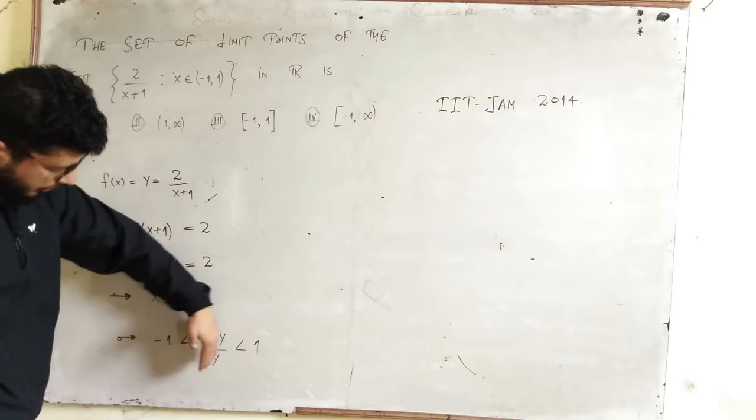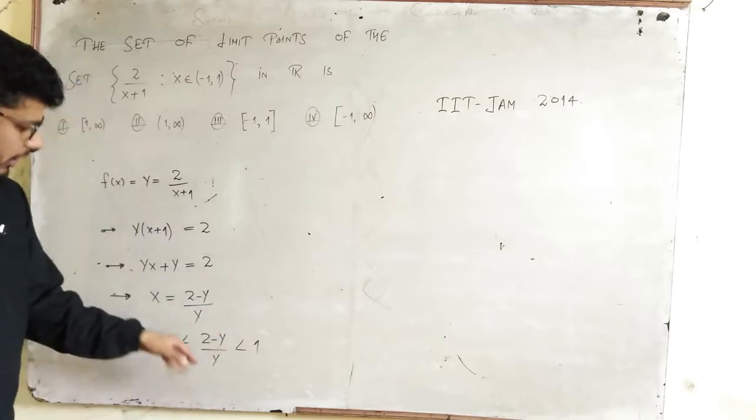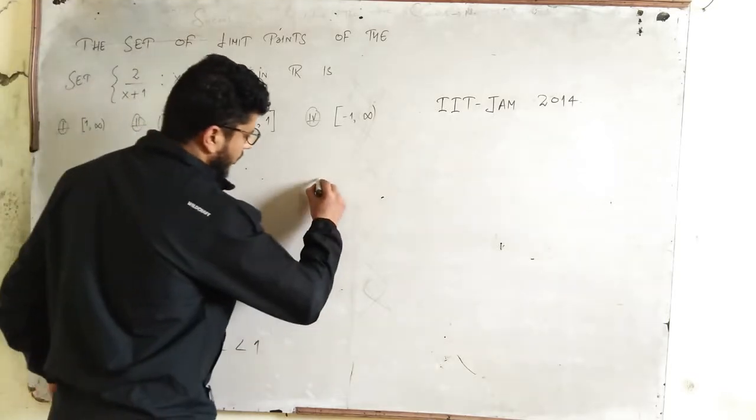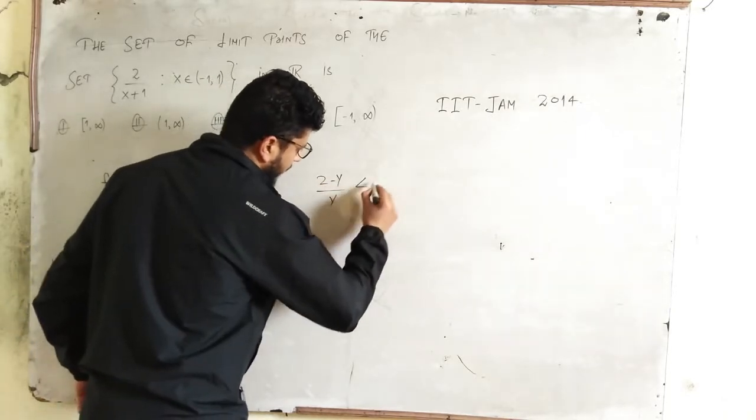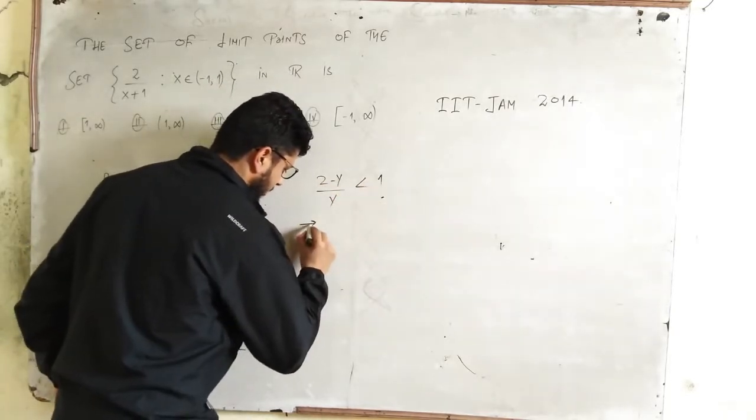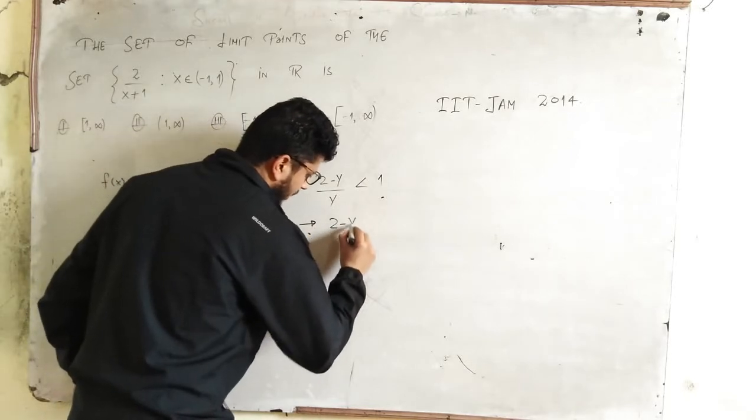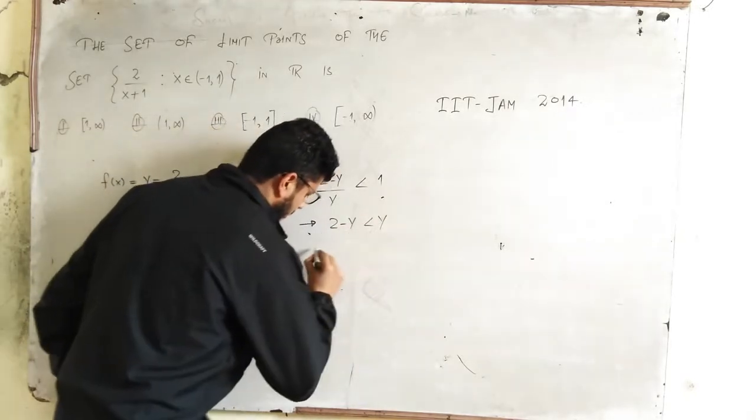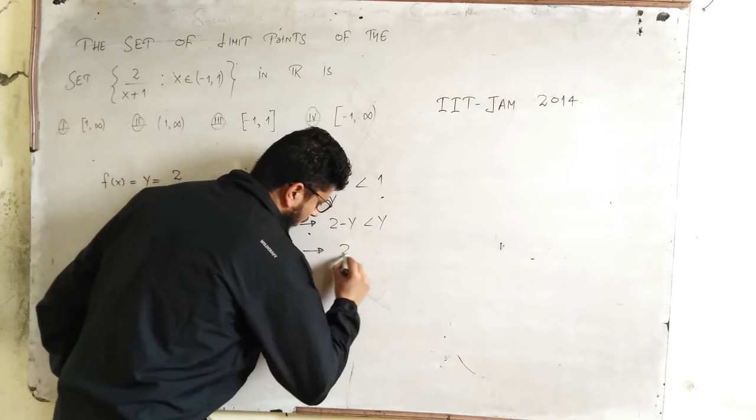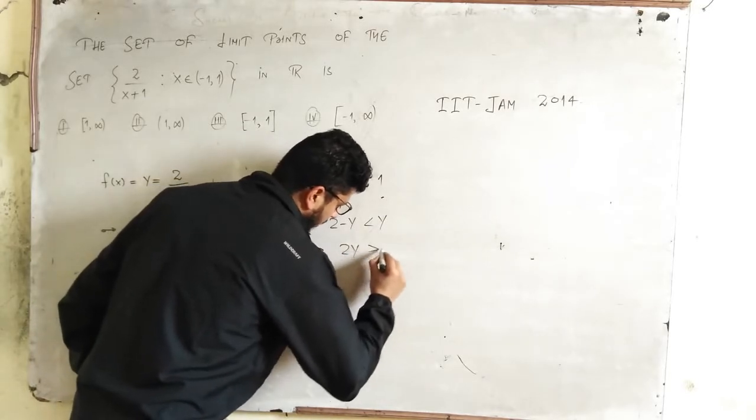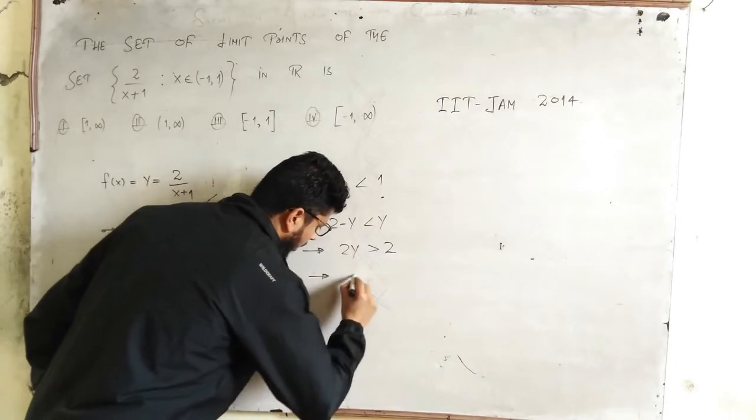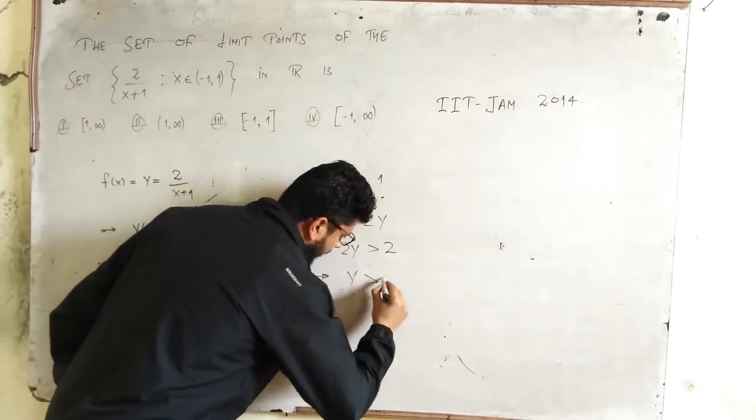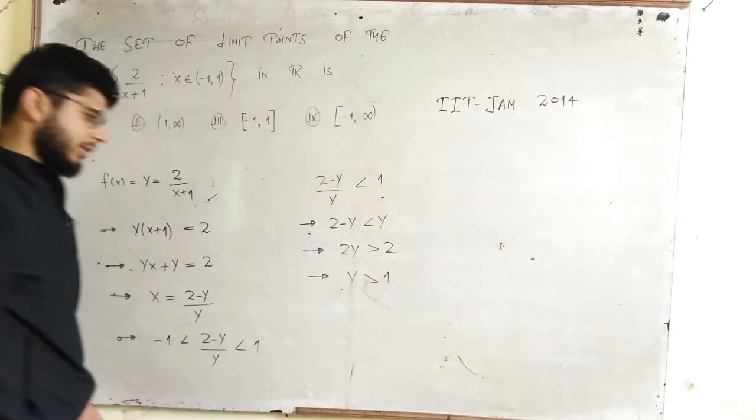First this inequality: (2-y)/y < 1, which implies 2-y < y, which implies 2y > 2, which implies y > 1. Take care.